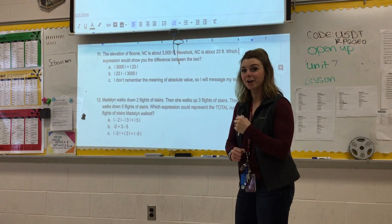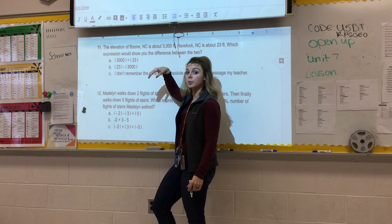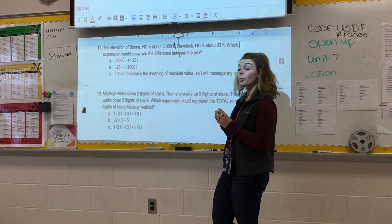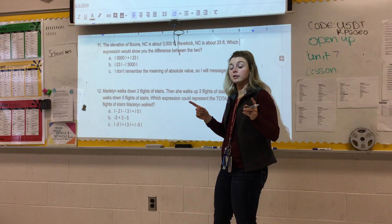And we're back, part three. We're on number 11 now. It says the elevation of Boone, North Carolina is about 3,000 feet. Hatteras, North Carolina is about 23 feet elevation. If you think about it, that makes sense. I did Google that first before I put that in, so that's roughly accurate.